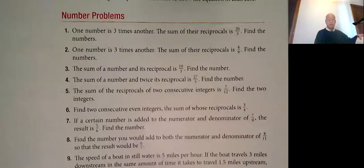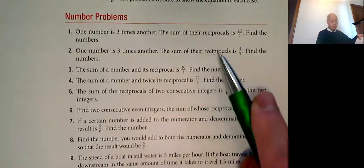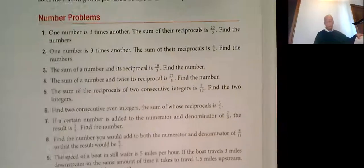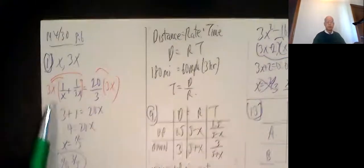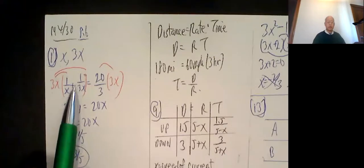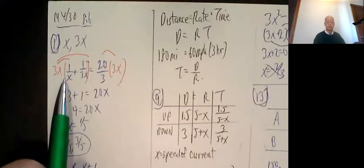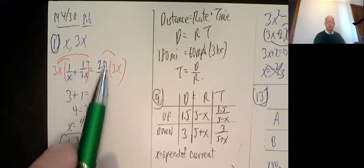Number one: one number is three times another, the sum of the reciprocals is 20 over 3 times the numbers. So the numbers are x and 3x, the reciprocals are 1 over x and 1 over 3x, the sum is 20 over 3. So this is the setup: 1 over x plus 1 over 3x sum 20 over 3.